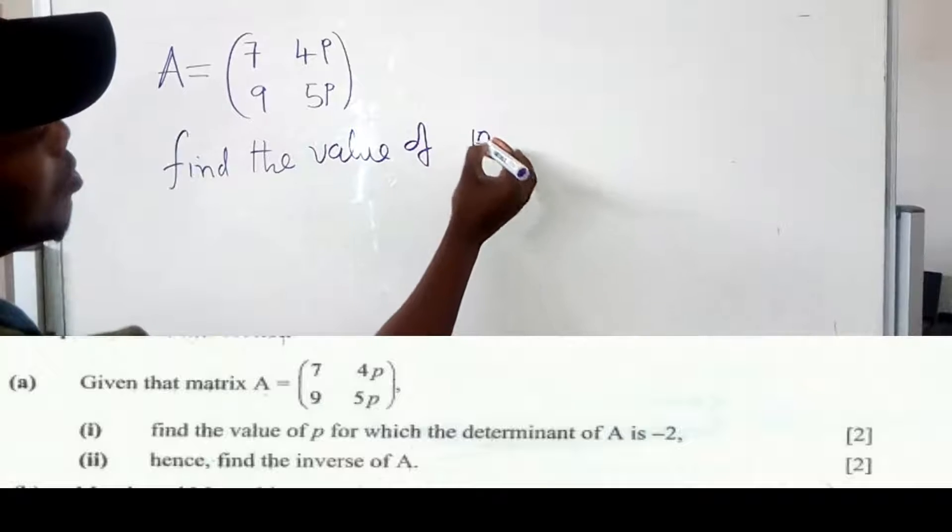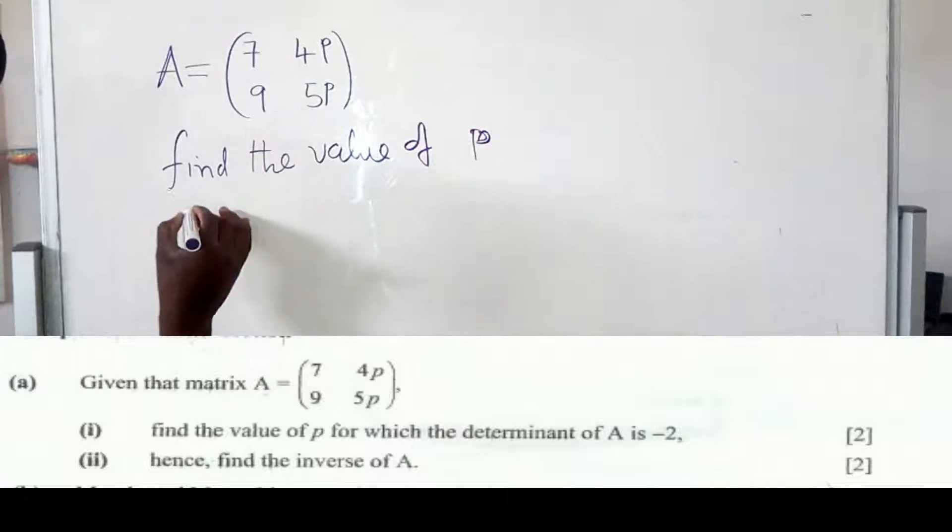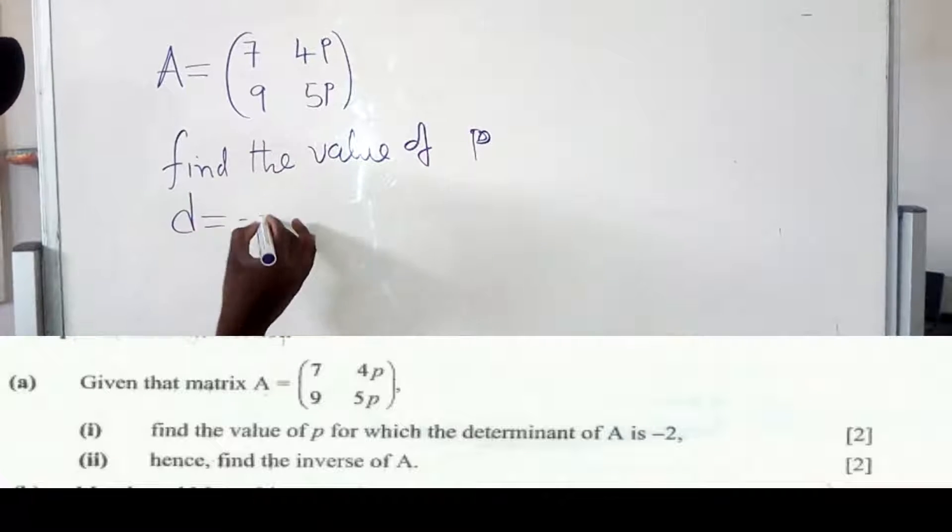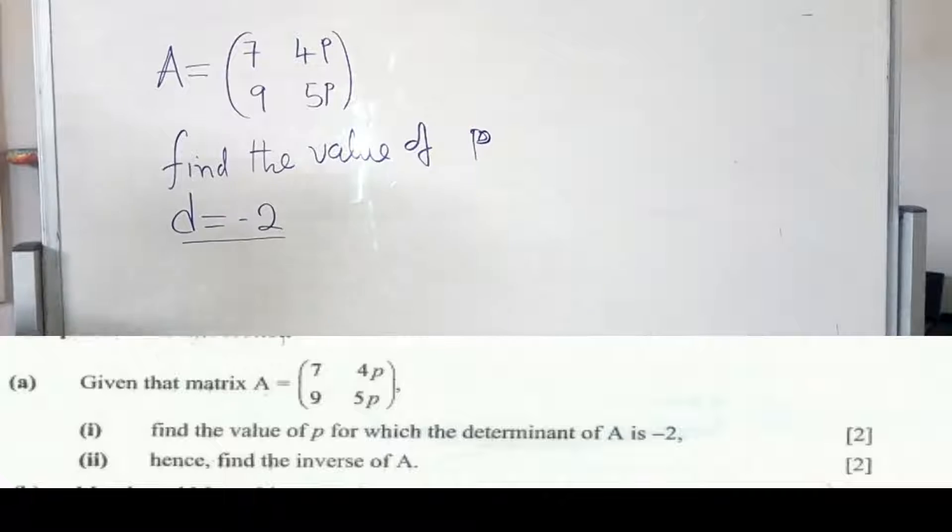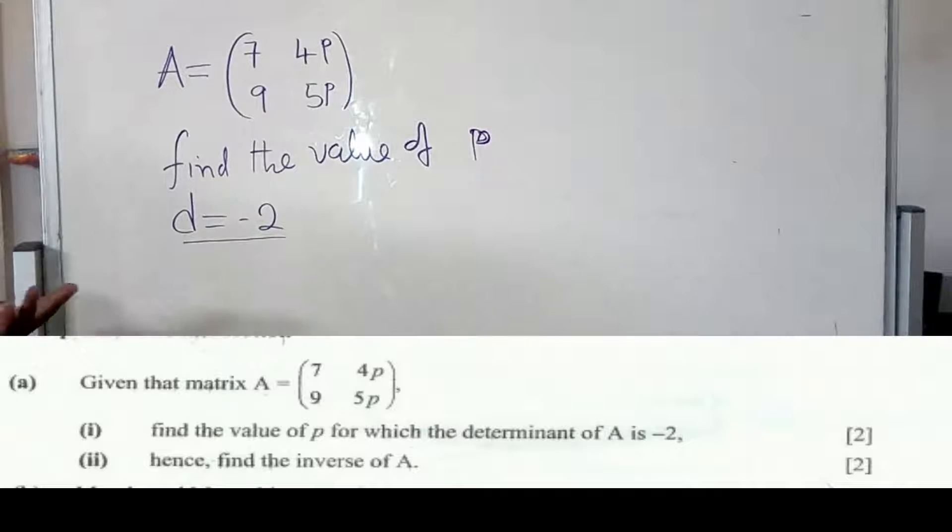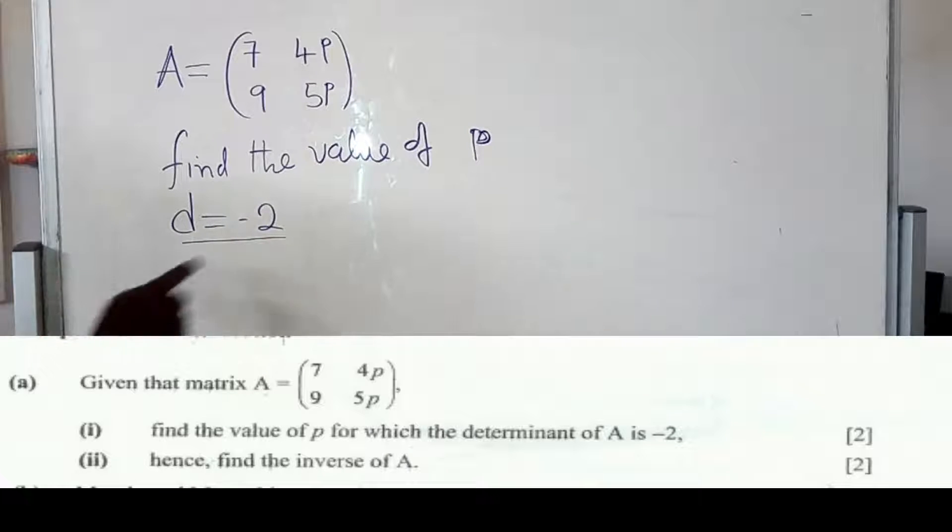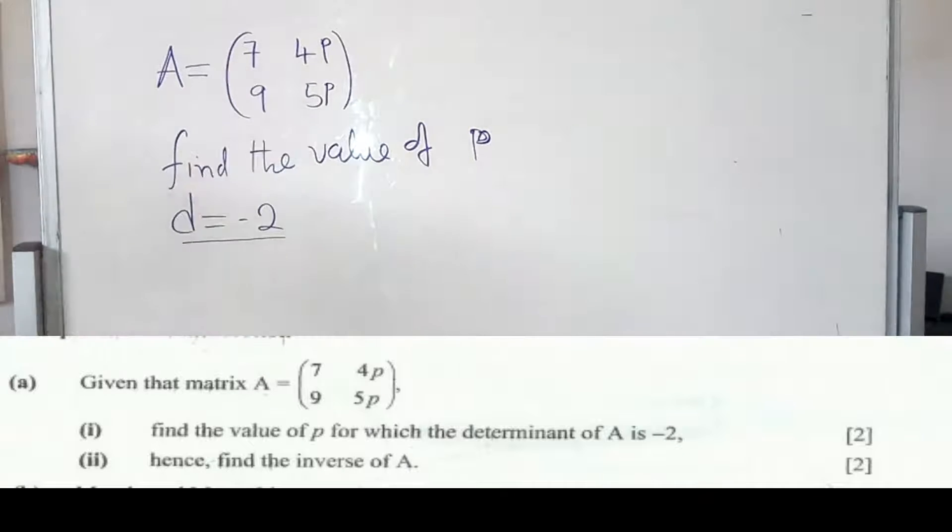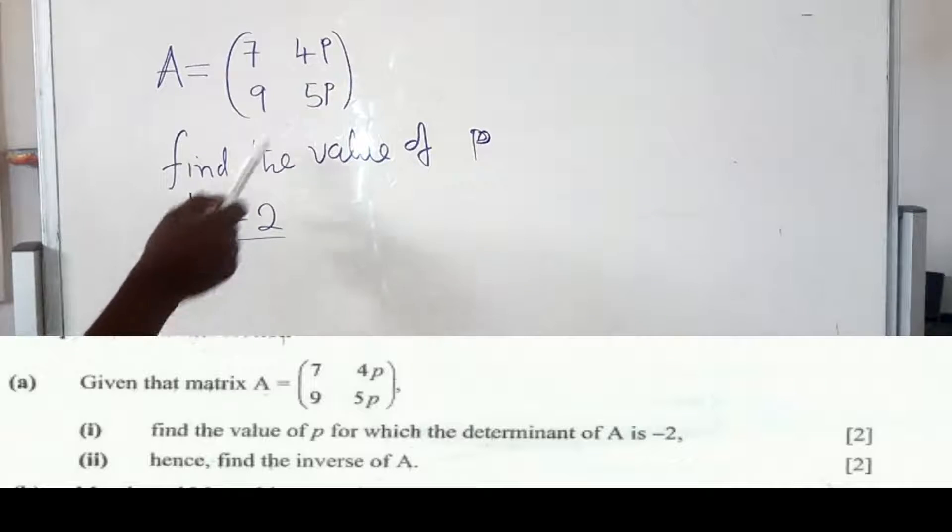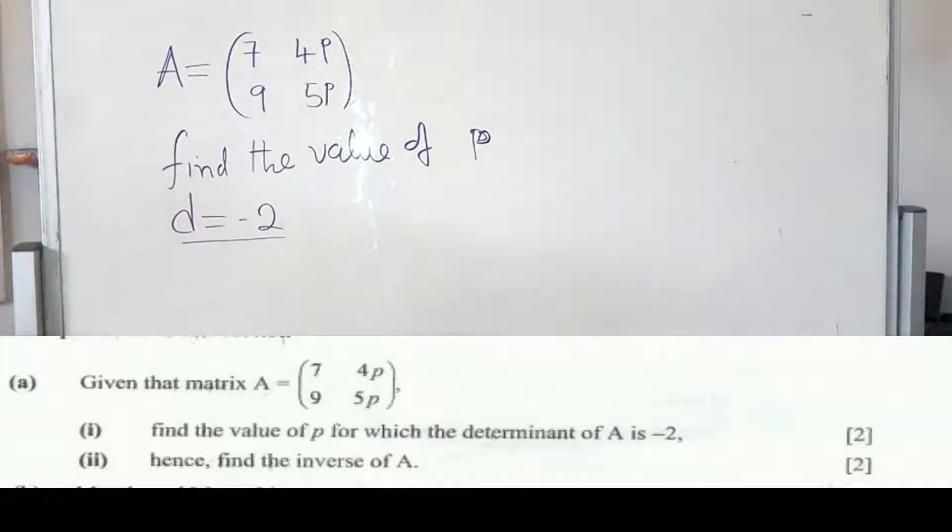Given the determinant. So, the determinant D is equal to negative 2. So, in the question or the statement, they have given us that the determinant of this matrix is negative 2. So, how do we now find the value of P?